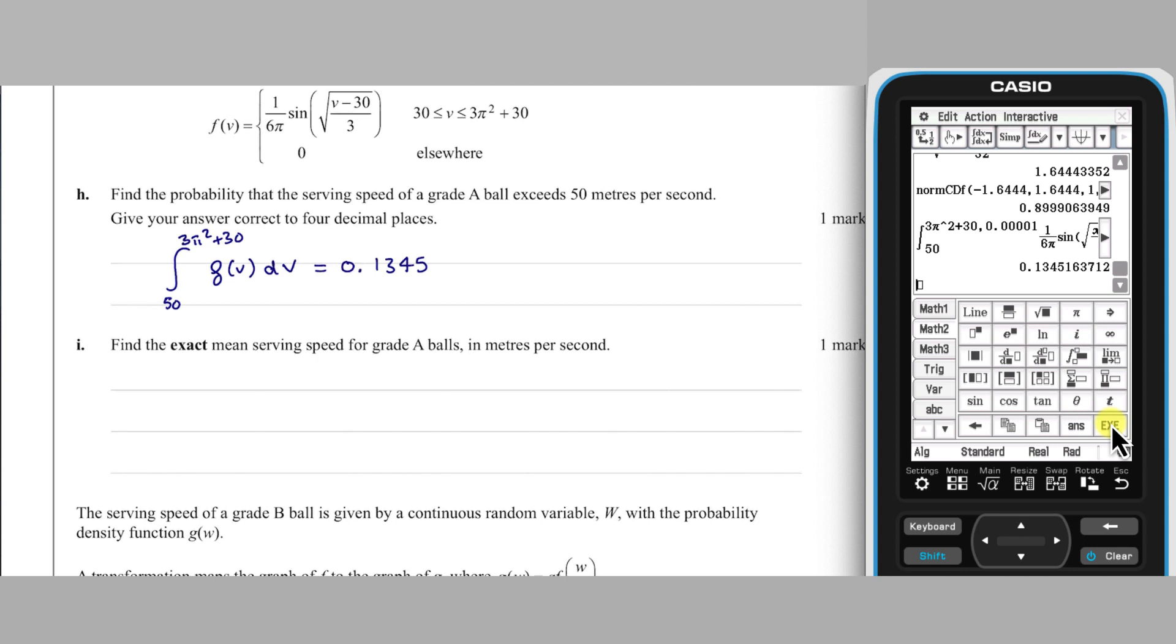Our next calculation with probability density function F is in part I, when we need to find the exact value of its mean. To find this, we need to integrate V times F of V from 30 to 3 pi squared plus 30. We can do this by editing the definite integral calculation from part G. Change the lower bound to 30, multiply F by the variable of integration, and remove the tolerance so that we will get an exact result. Pressing execute, we obtain a mean of 3 pi squared plus 12.